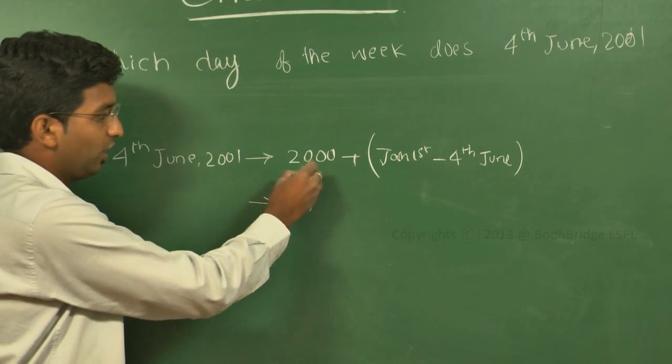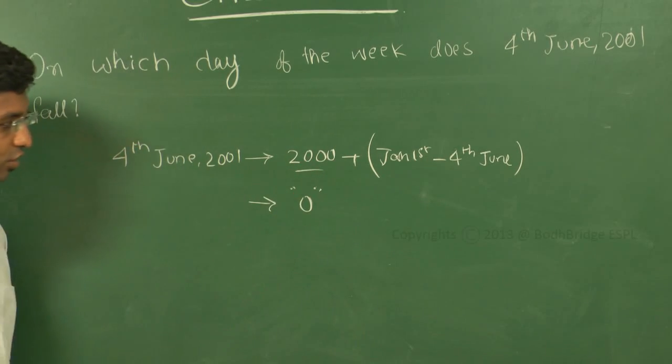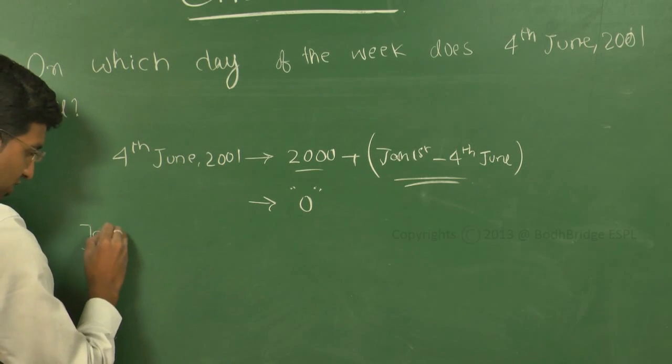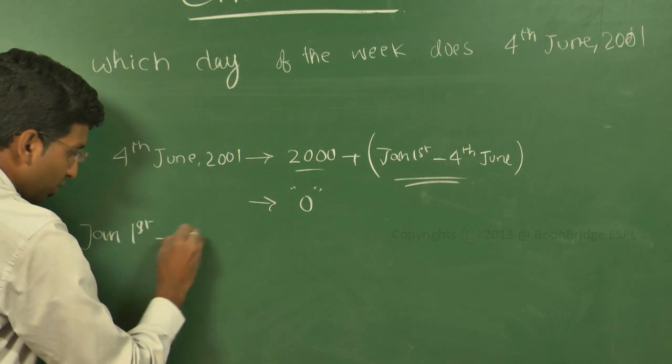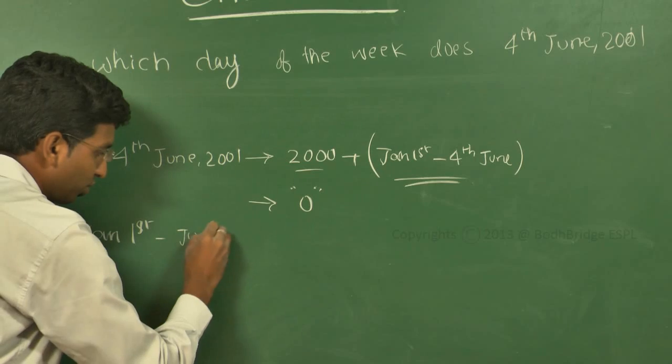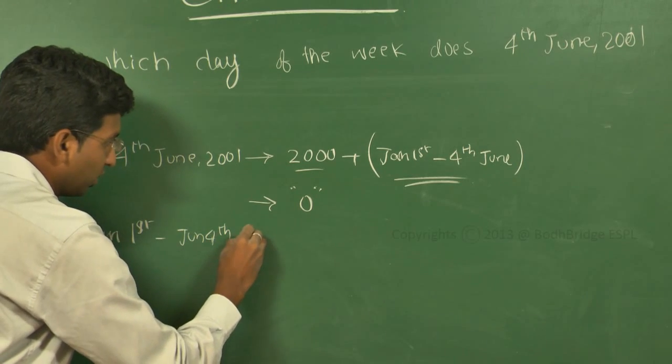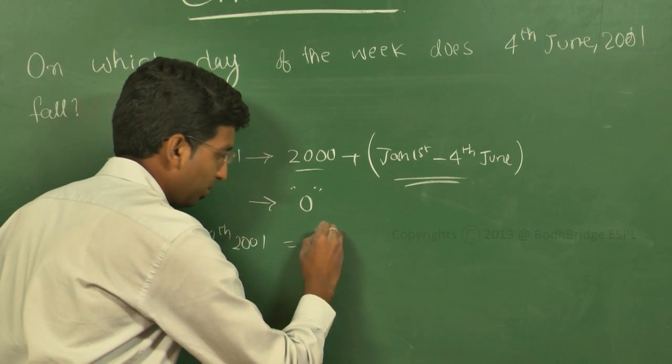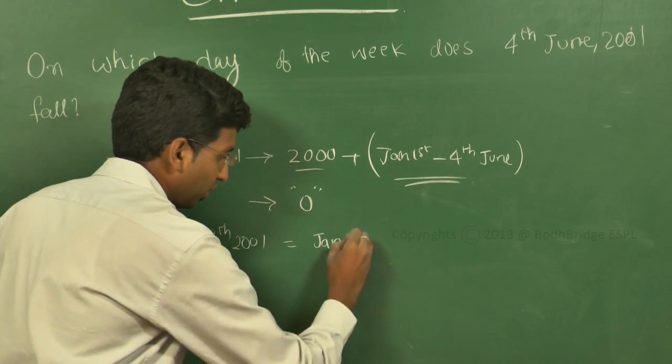Now we have to find the number of odd days present from January 1st to June 4th, 2001. How many odd days are there? In January, there will be three odd days.